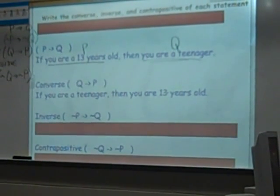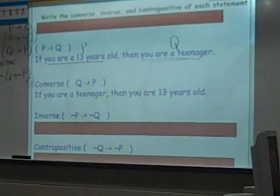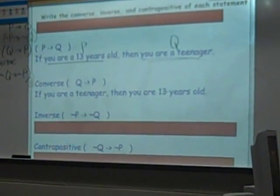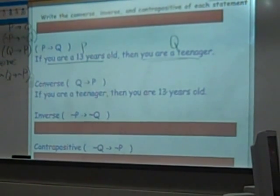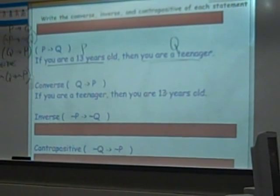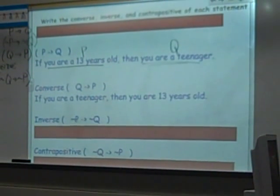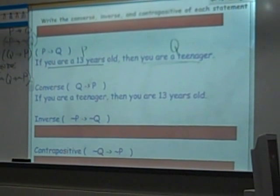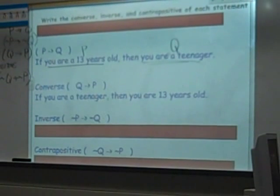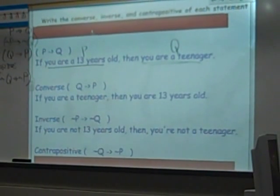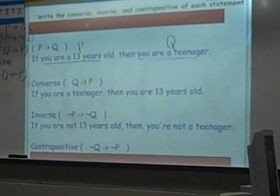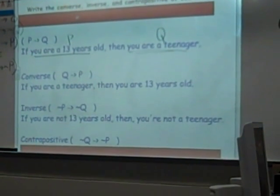How about the inverse? If you are not a 13-year-old, then you are not a teenager. So this says not P — P was your 13-years-old — so if you're not 13-years-old, then Q is you're a teenager, and this squiggly line means 'not,' so then you are not a teenager. If you're not 13-years-old, then you're not a teenager — that's what the inverse says.